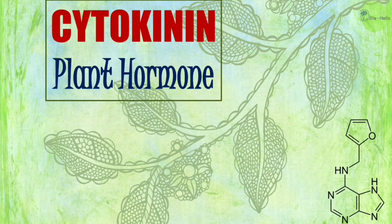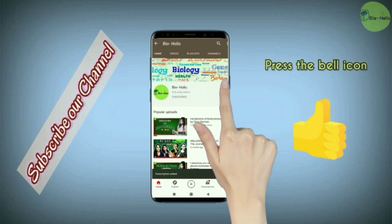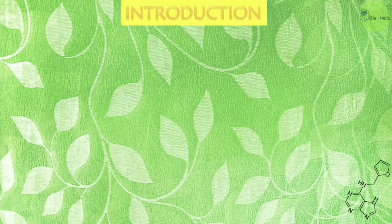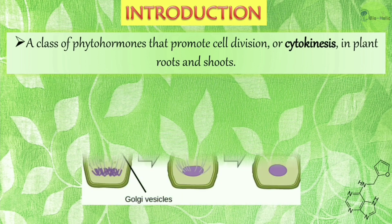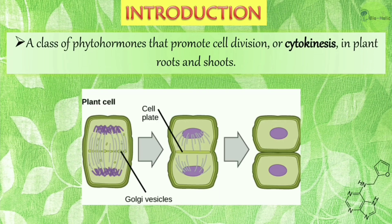Today I will describe the cytokinin hormones and their role in plant growth and development. As an introduction, cytokinins are a class of phytohormones or plant hormones that promote cell division or cytokinesis. Since their main function is to promote cytokinesis, they are known as cytokinins. Cytokinesis is the division of a cell, and in plant cells a cell plate is formed, splitting one cell into two.